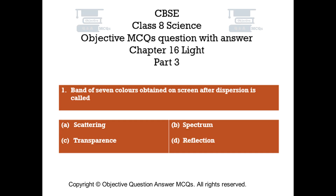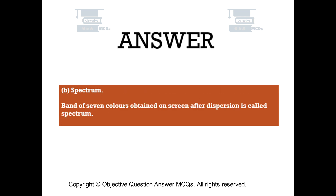Question number 1: Band of 7 colors obtained on screen after dispersion is called — Option A: Scattering, Option B: Spectrum, Option C: Transparence, Option D: Reflection. The right answer is Option B: Spectrum. Band of 7 colors obtained on screen after dispersion is called Spectrum.